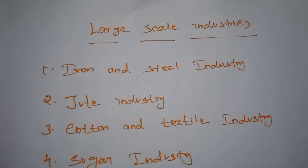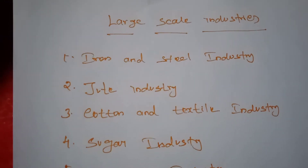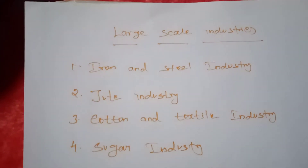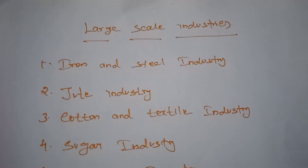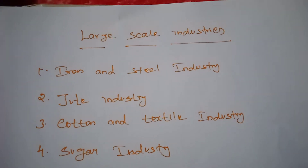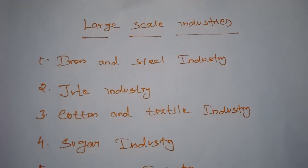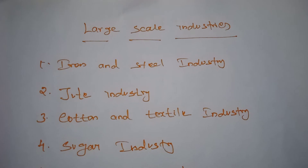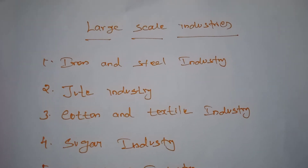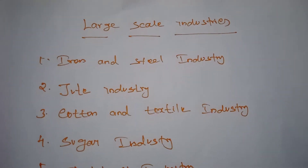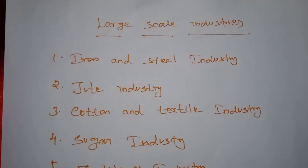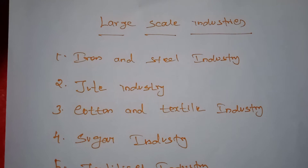The term large-scale industries refers to those industries which require huge infrastructure, manpower, and a large influx of capital assets. If any industry is producing a huge level of product with huge infrastructure facilities and huge manpower, we consider it a large-scale industry. Large-scale industries are also in need of large capital assets, so the term is a generic one including various types of industries.